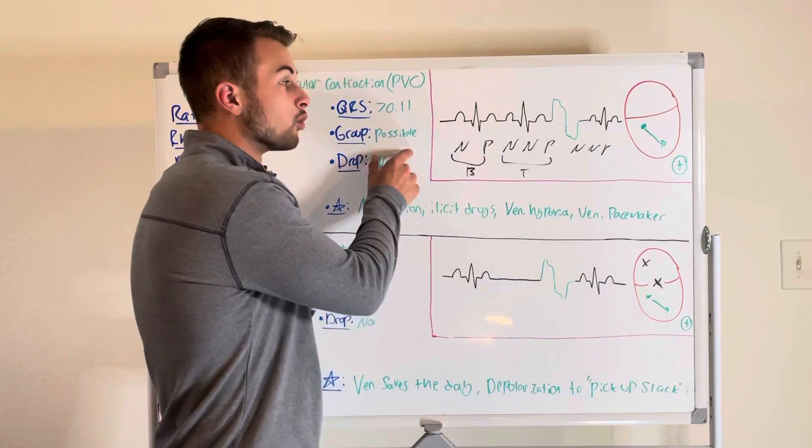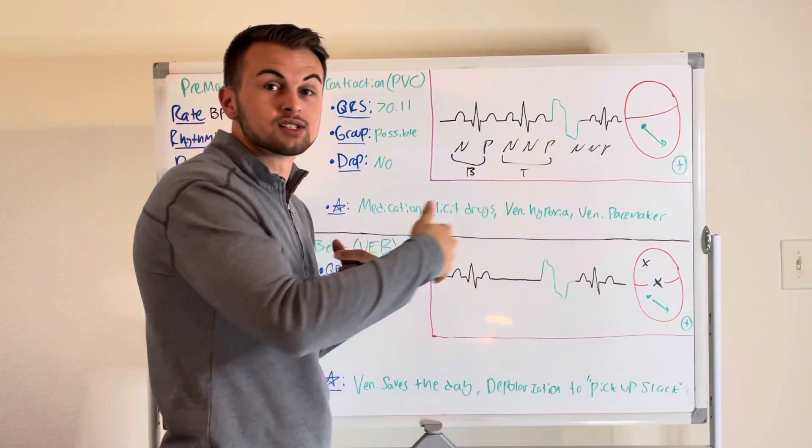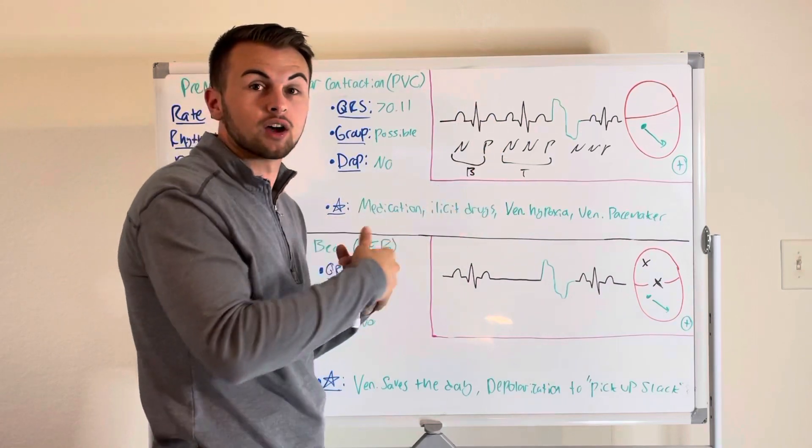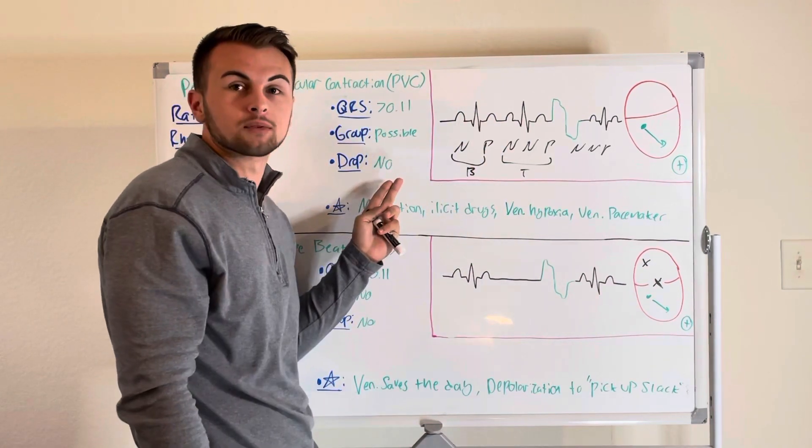Now there may be grouping, meaning there might be a bunch of PVCs that happen one after the other, but there are no dropped complexes.